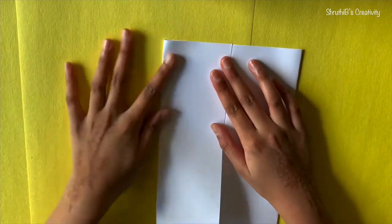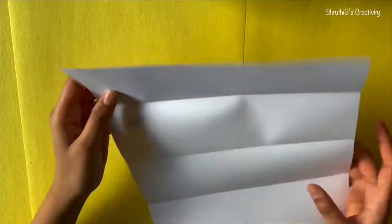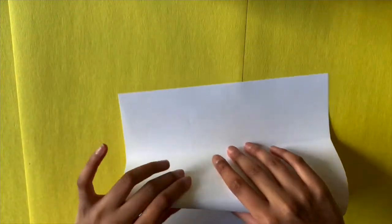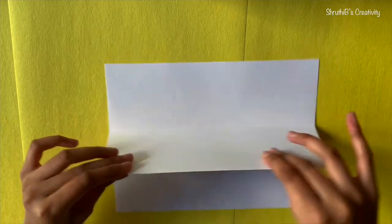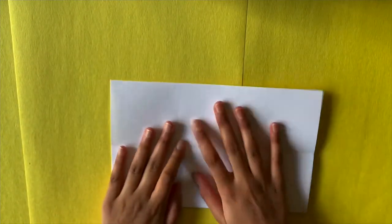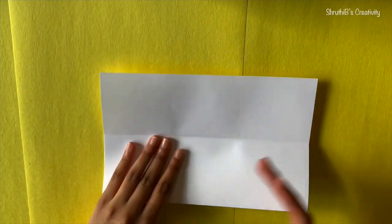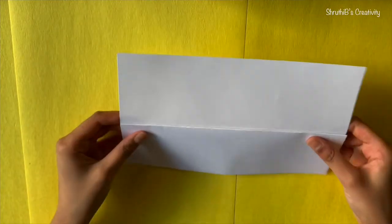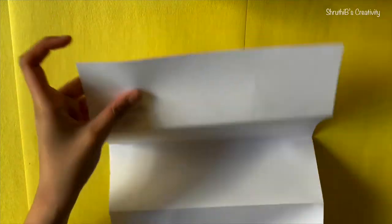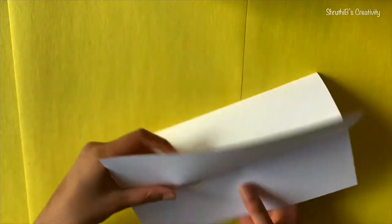Fold it towards the center. Now when you unfold all of them you should be having four rectangles. Now our attention can be focused on the center line and we can just fold it towards us upwards and downwards. When you flip it over you should be having this. Now you might as well just open it and close it.